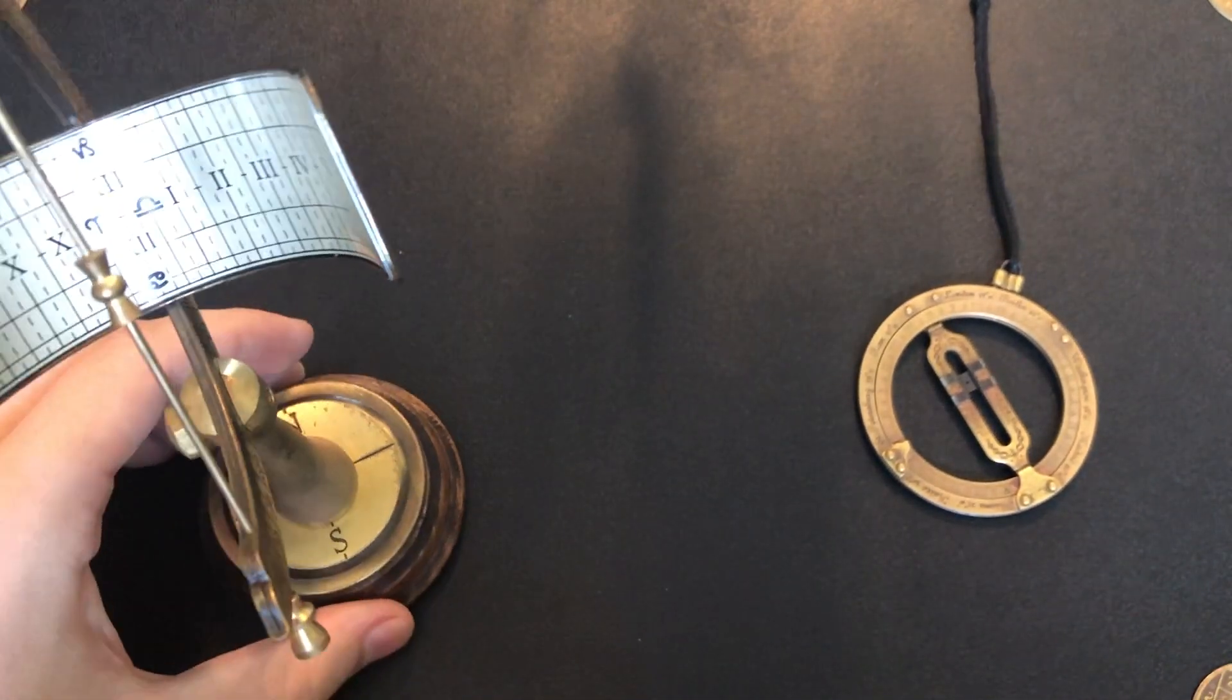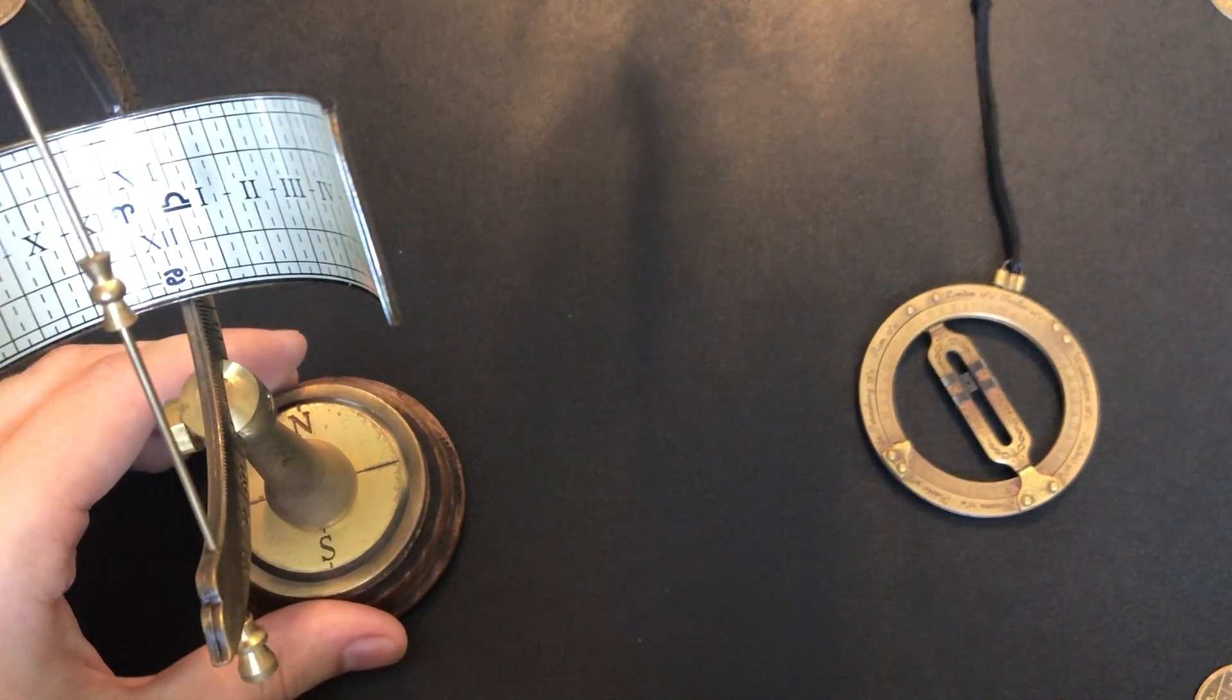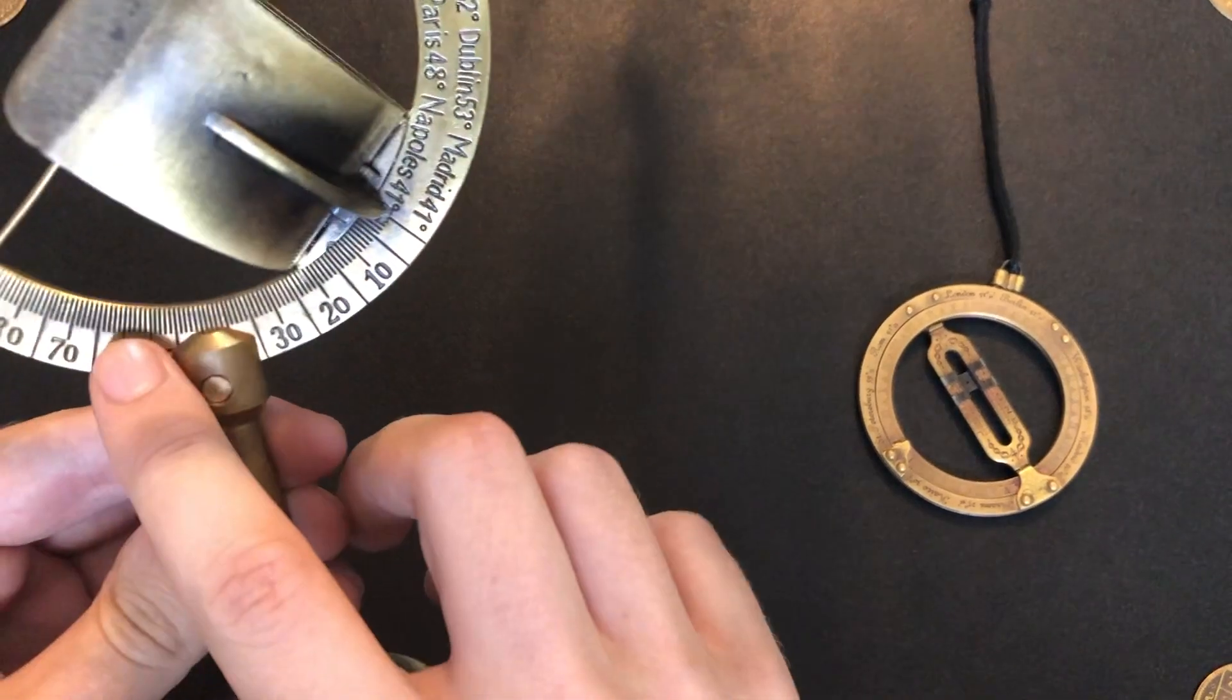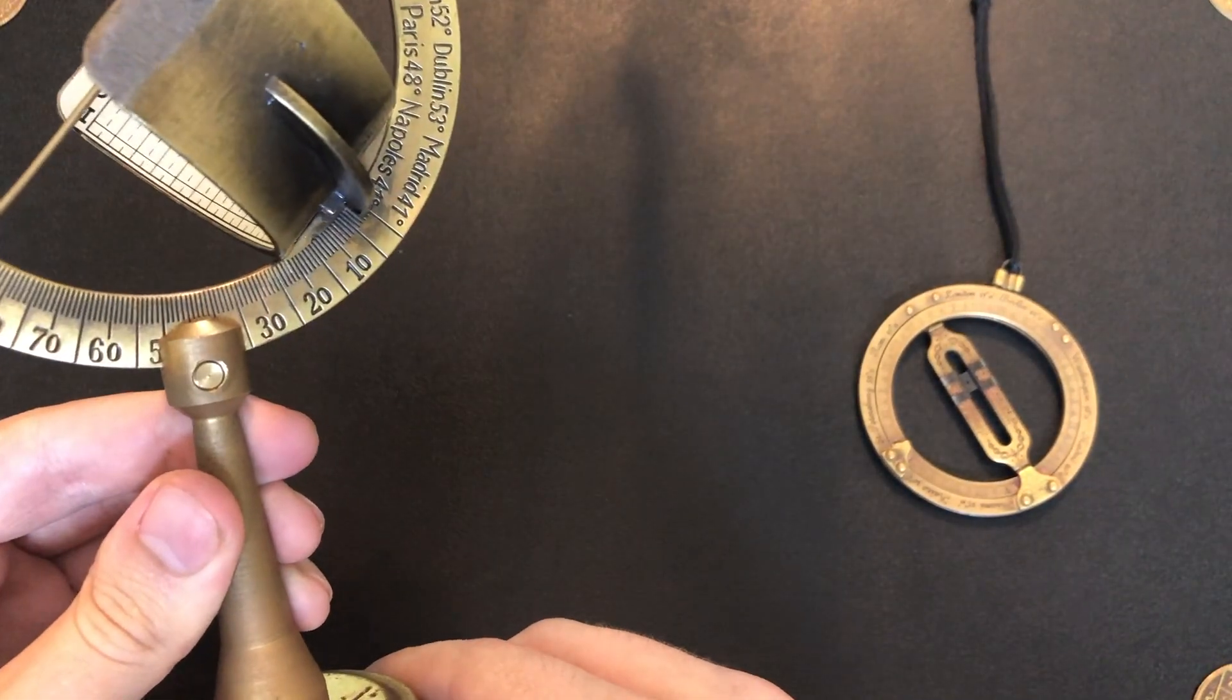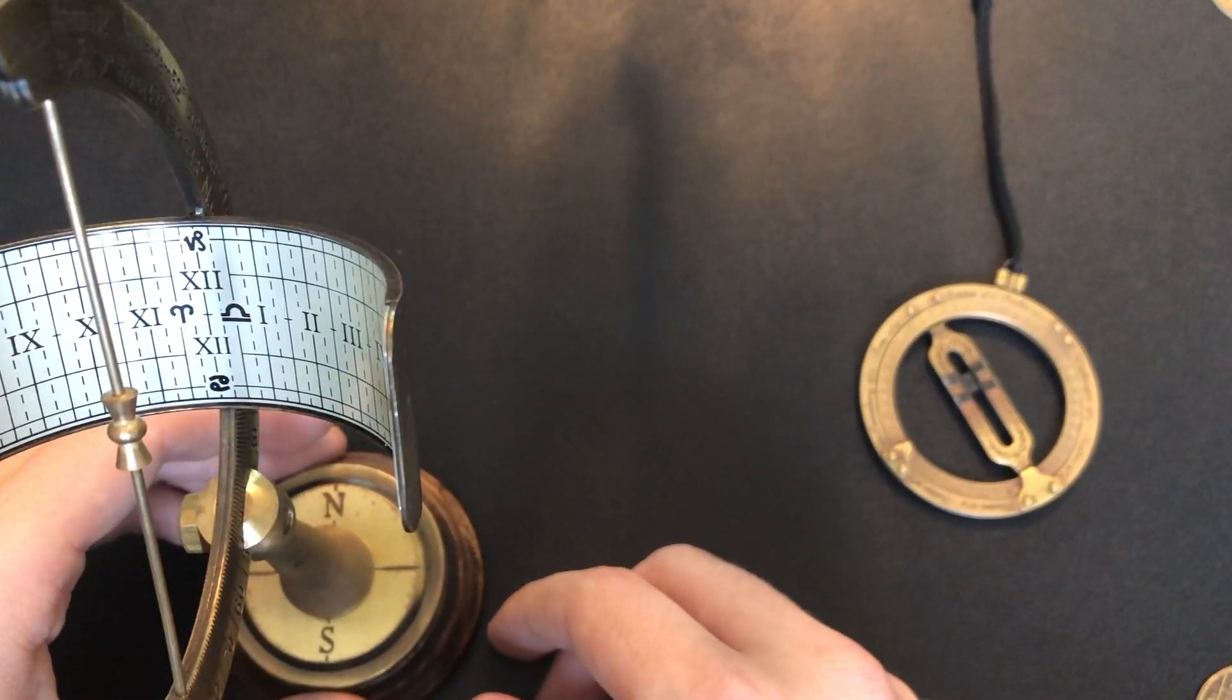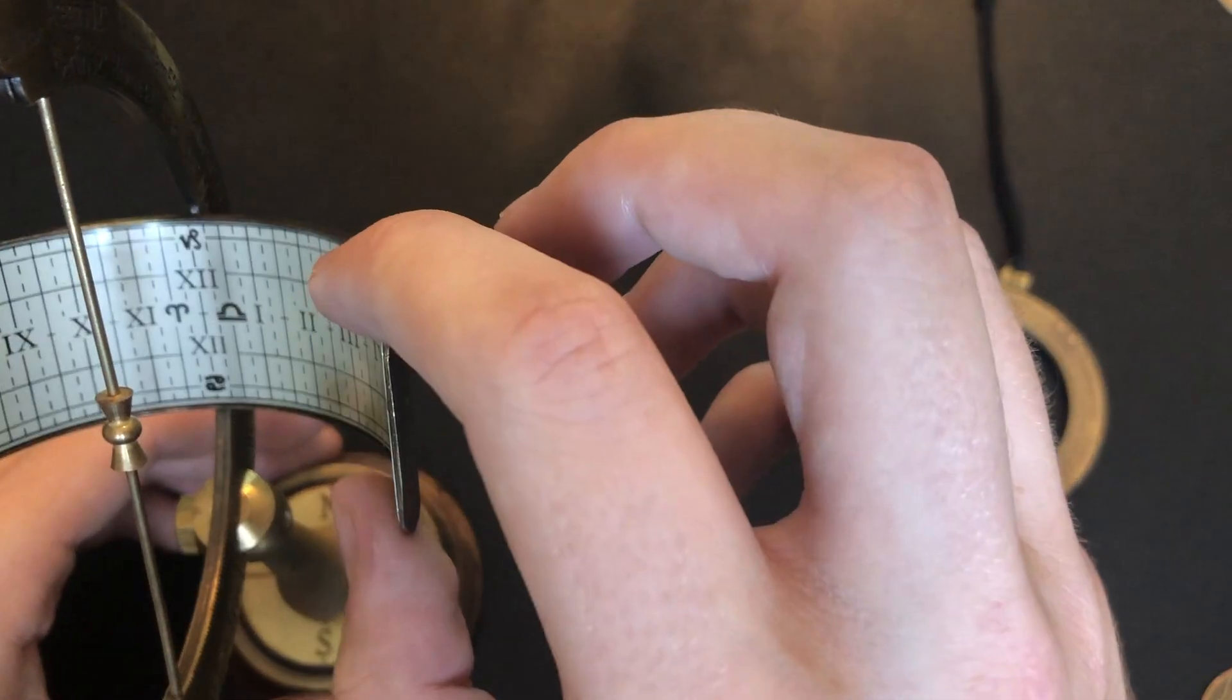Let's consider this dial in terms of inputs and outputs. The inputs in this case are a northern orientation and a setting for the local latitude. With these two variables known and accounted for, the outputs given are solar time and date.